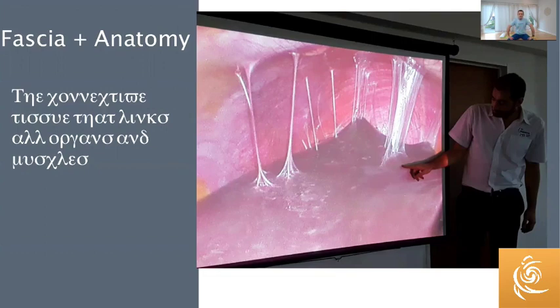So adhesions are literally ropey materials that form between parts of the body — in this case the diaphragm muscle and the liver — and they interfere with the normal function and normal movement. It's a really wonderful photo.